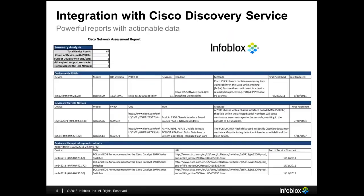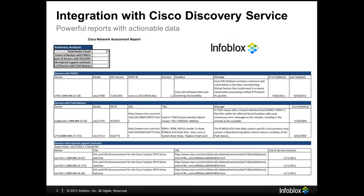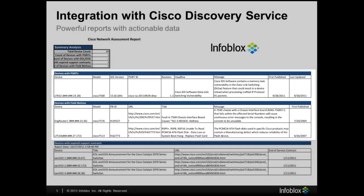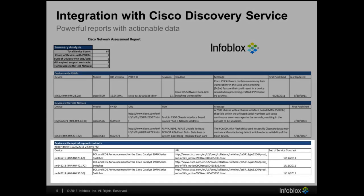It's that simple. The reports provide a high-level overview of the risk areas as well as details into which devices are impacted. Users can quickly see devices that have PSIRTs and/or field notices including titles, details, messages, and when they were first published.